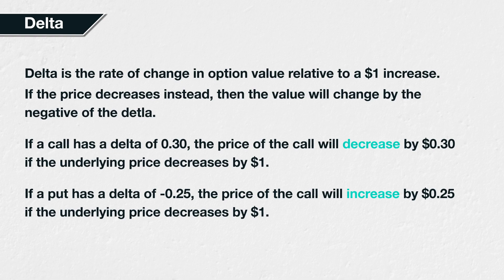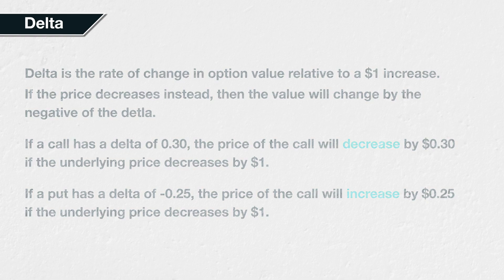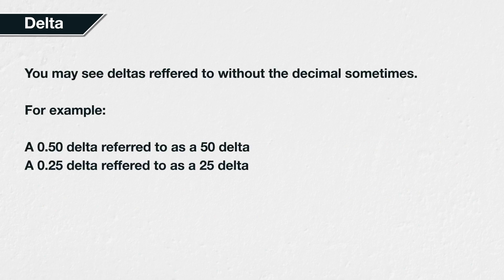All other things being equal, as the price of the underlying asset decreases, you would expect call option prices to fall and put option prices to rise. It's worth mentioning that deltas are sometimes referred to without the decimal. For example, a delta of 0.5 is sometimes referred to as a 50 delta, and a delta of 0.25 is sometimes referred to as a 25 delta. So if you see someone write that they are looking at the 25D call, that means they are looking at a call option with a delta of 0.25. I usually prefer to work with decimals as it makes calculations easier, so I will continue to use them in these examples.